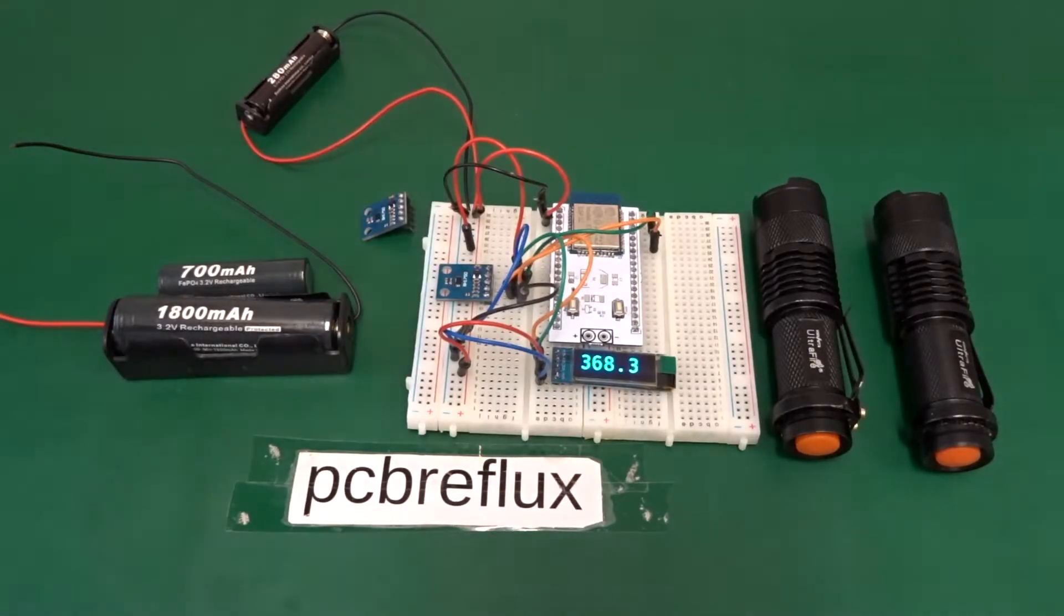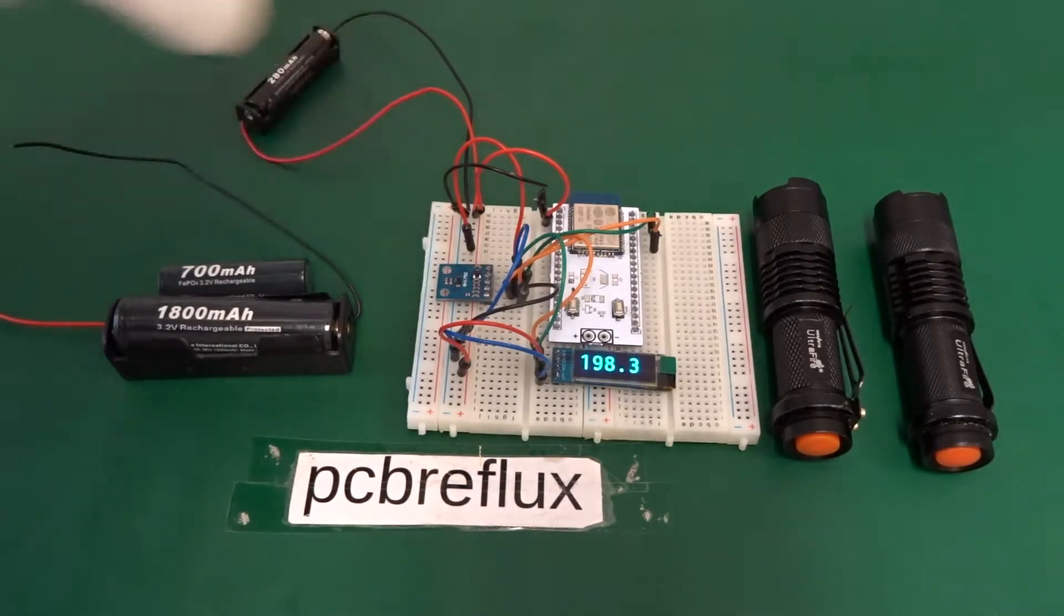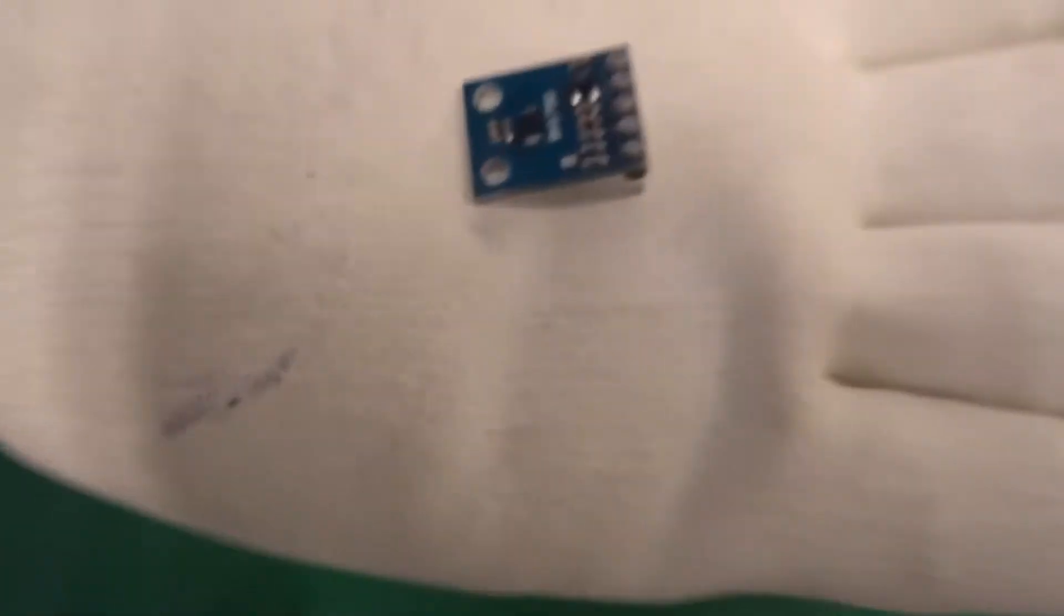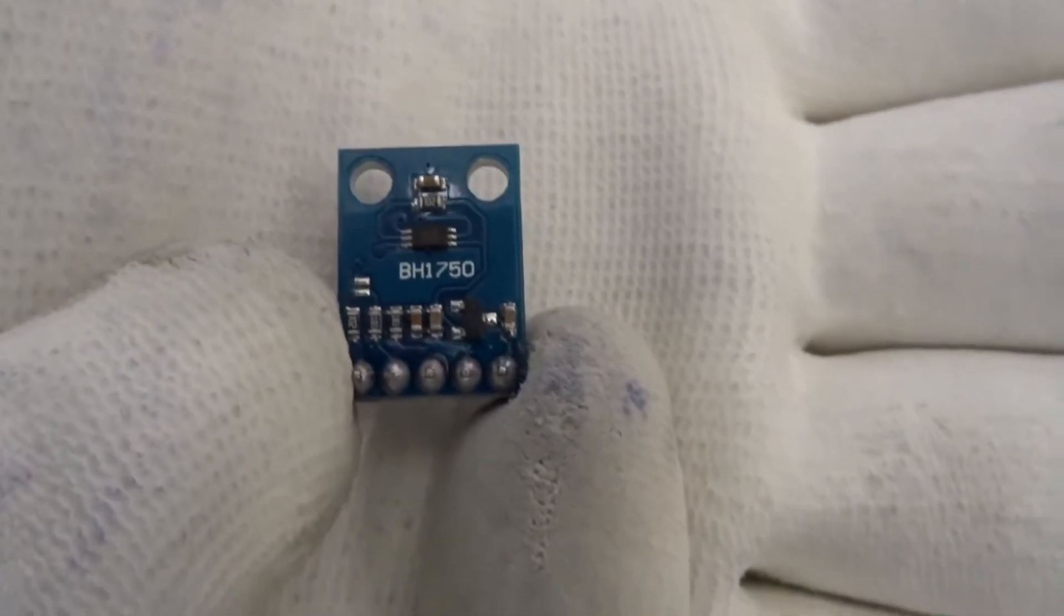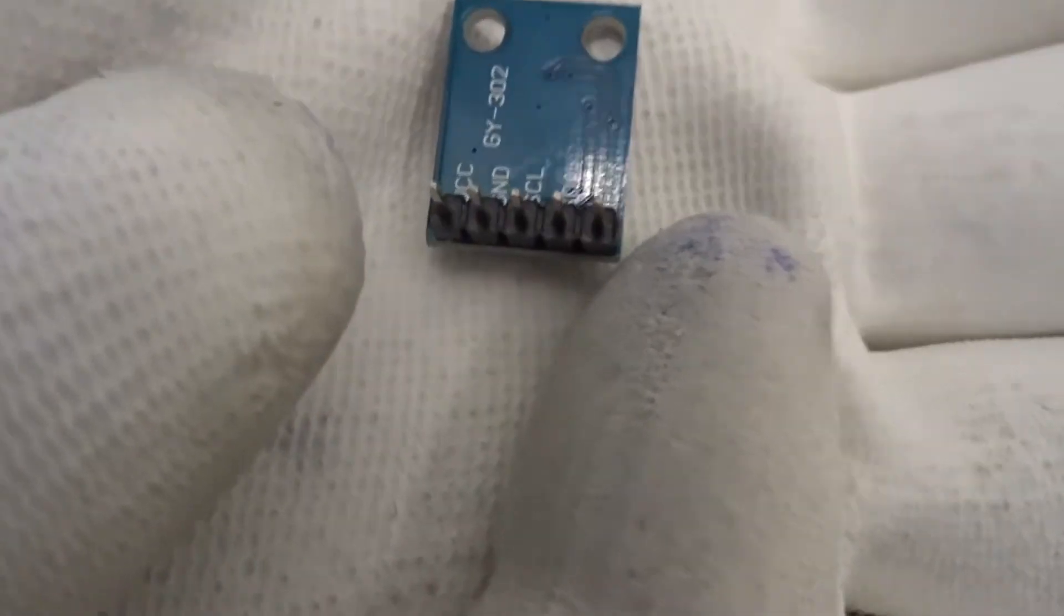Now let's have a look to the bench. First, let's see the BH7050 module. This is the front side with all the components, and on the back side we see there's only the silkscreen with the pinout readings.